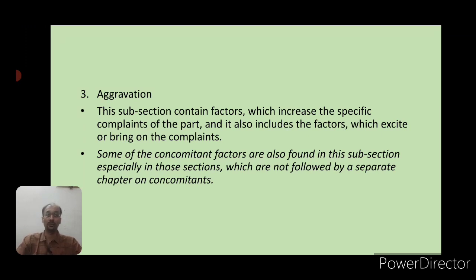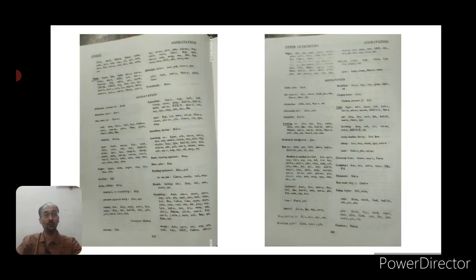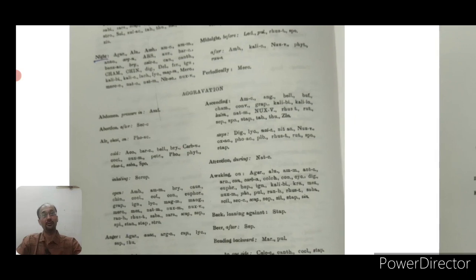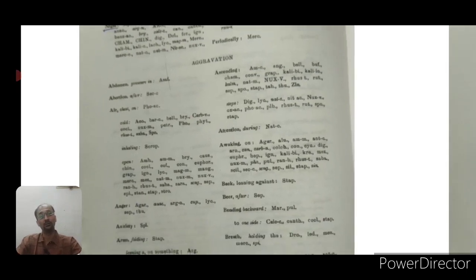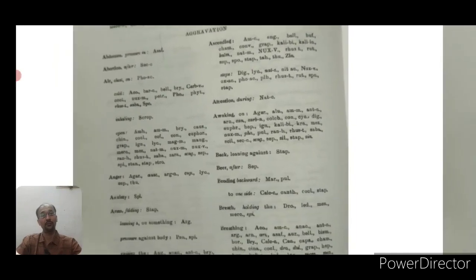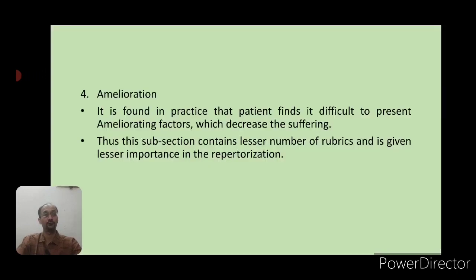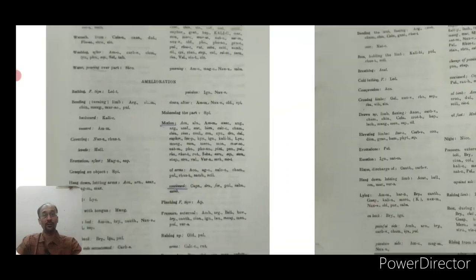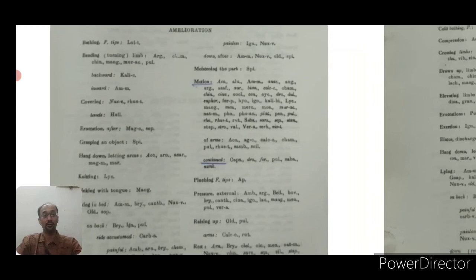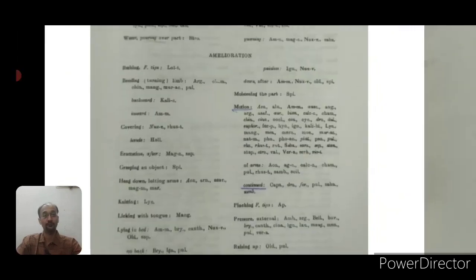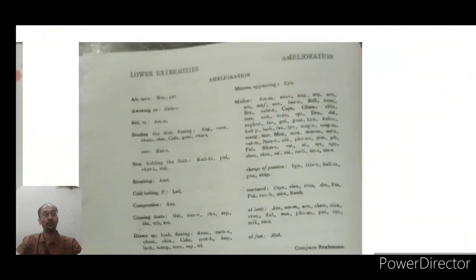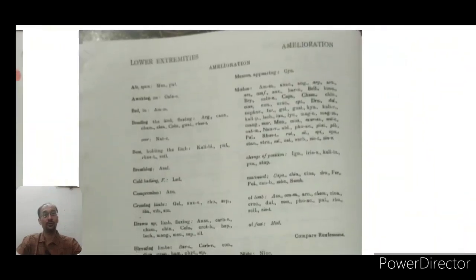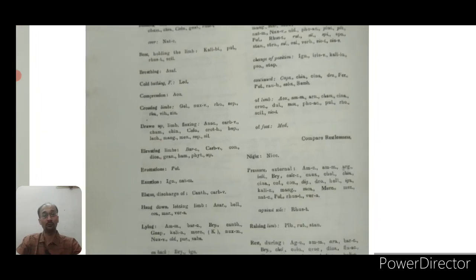The next subsection is aggravation, where you will find all aggravating modalities listed in alphabetical order. After that comes the subsection of amelioration, where you will find all rubrics of ameliorating modalities. For example, in the chapter on lower extremities, you have an alphabetical arrangement of all ameliorating modalities.